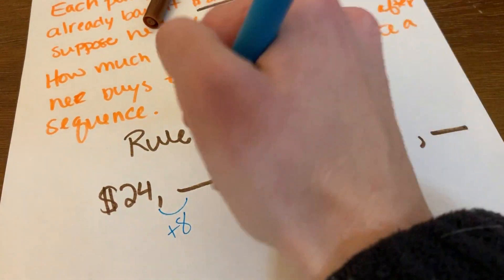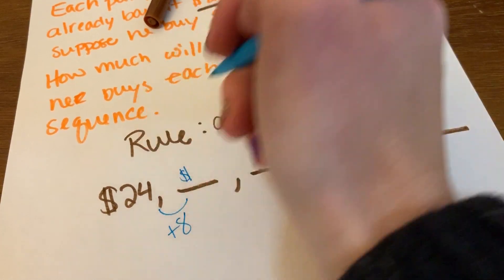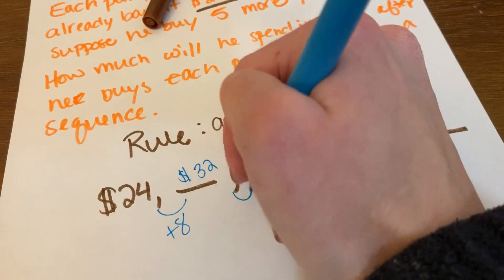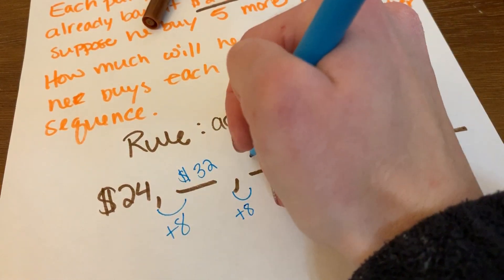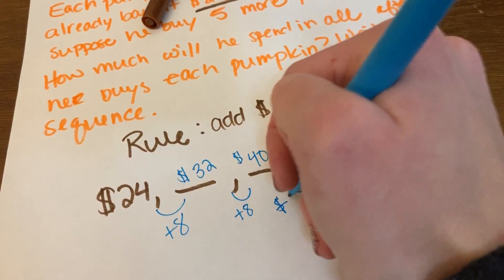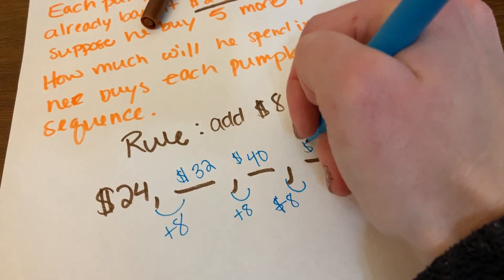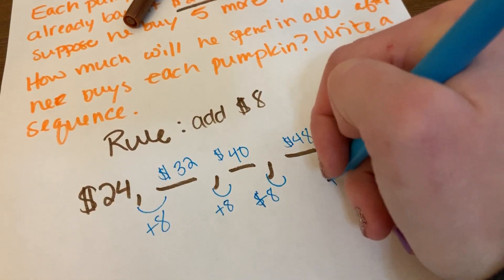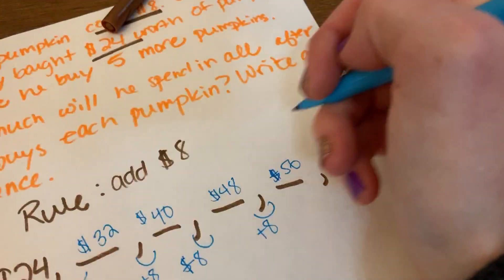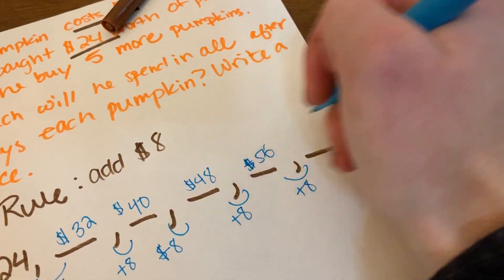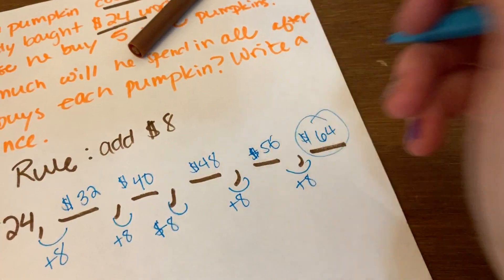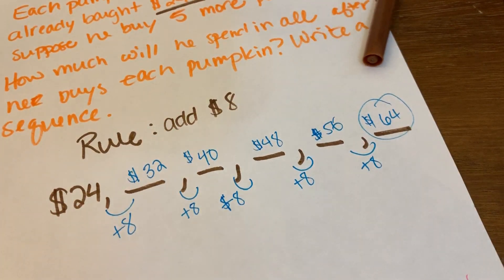24 plus 8, that is going to give me 32. Plus 8, it's going to give me 40. Plus 8, it's going to give me 48. Plus 8, it's going to give me 56. Plus 8, it's going to give me 64. So he's going to spend $64 in total.